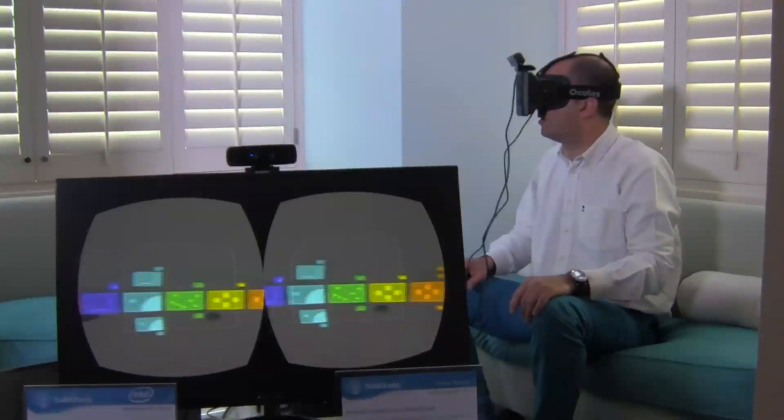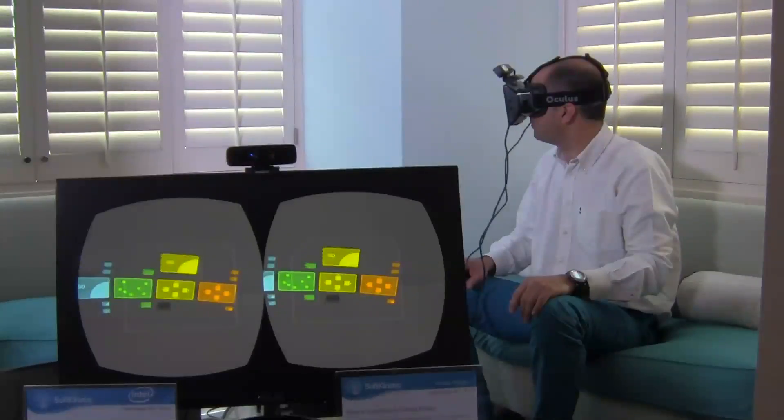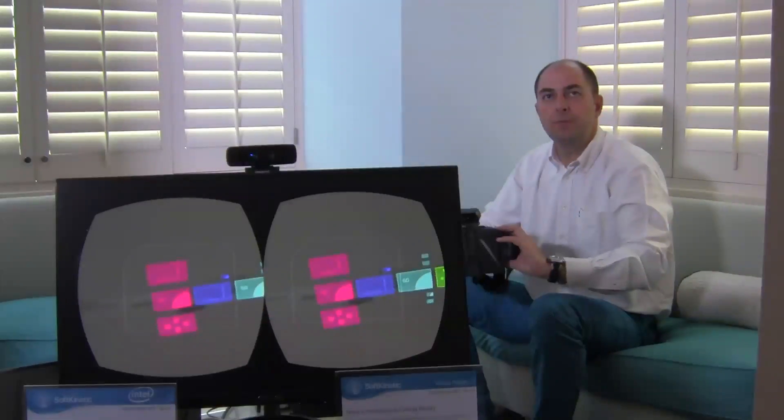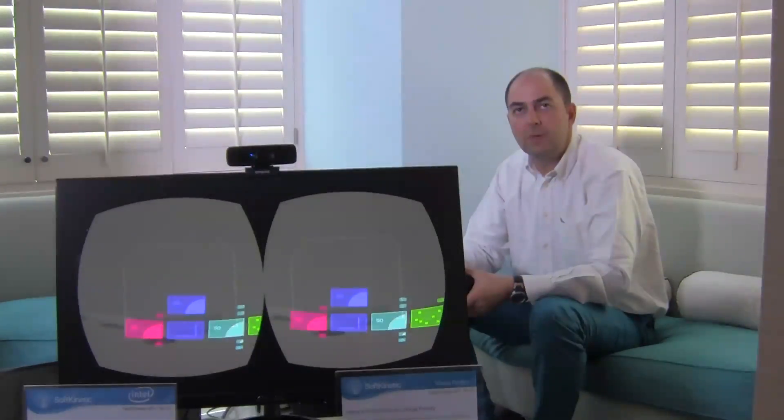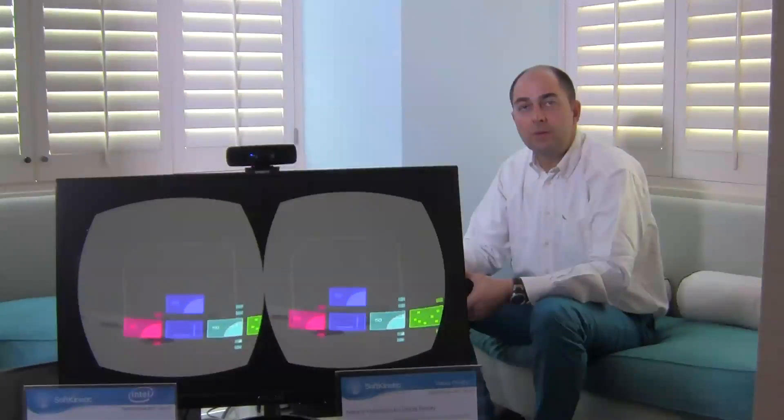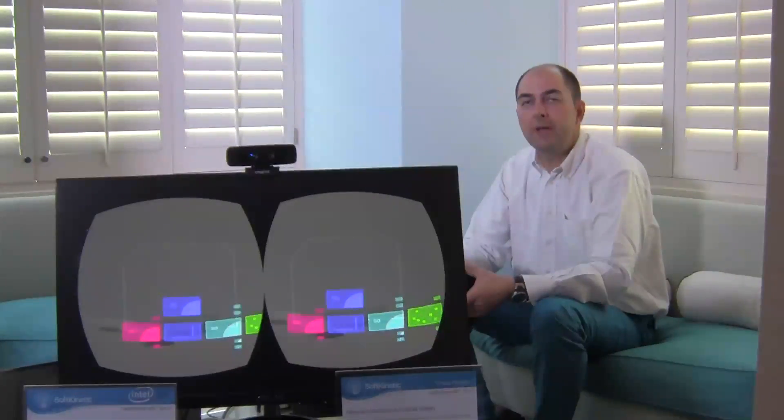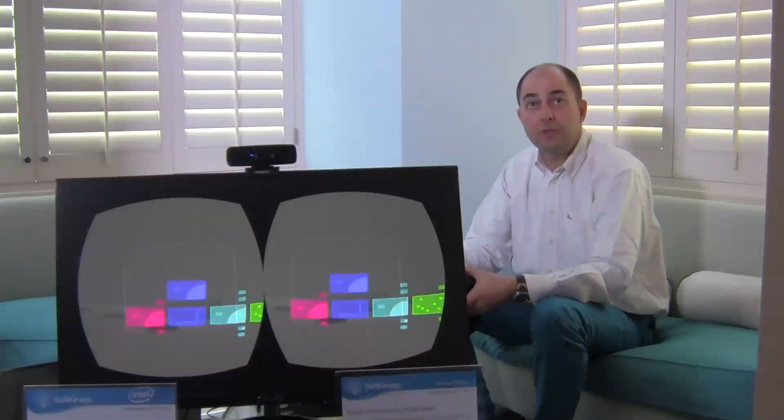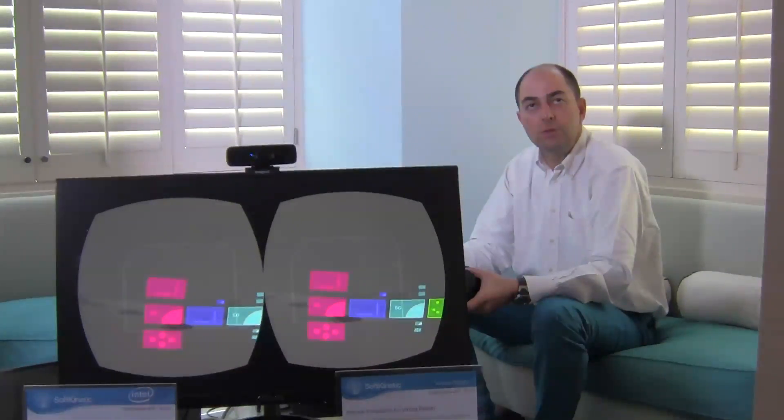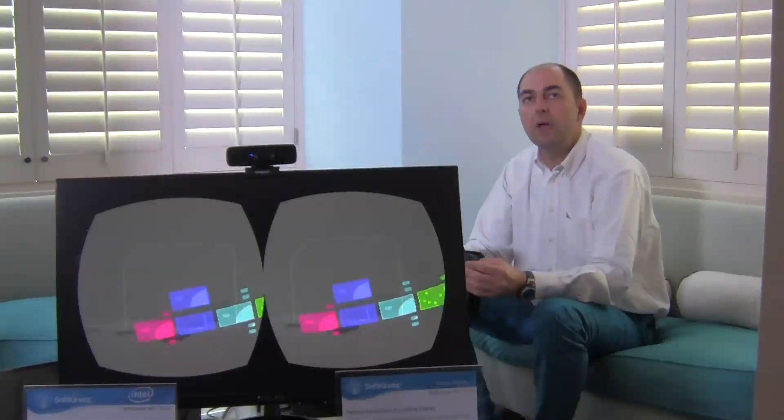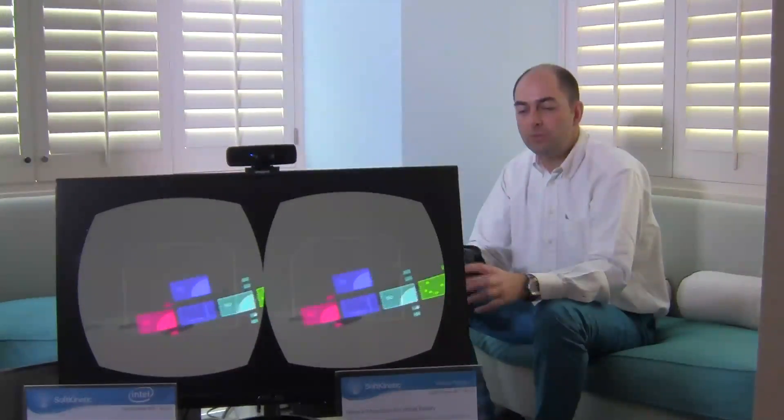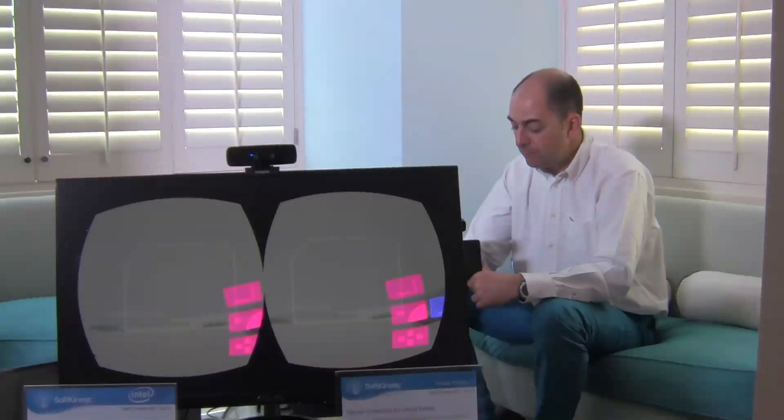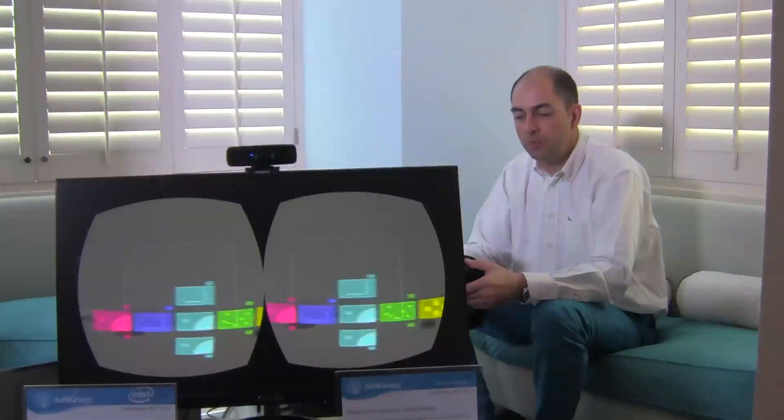But that really adds a lot to the experience. So you're bringing one element of the physical world, which is your hand, into the virtual space by having the 3D sensor mounted on top of the virtual goggles. Correct, yes. We are bringing a reference into the virtual world, which is really useful for the user to understand what he is doing in the virtual world. But it's also a way to really interact with the object in the virtual space. That fully makes sense to combine those two technologies.